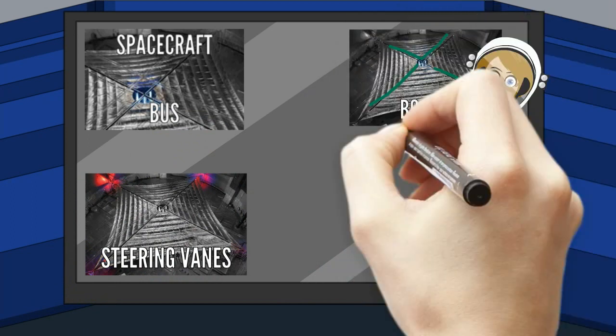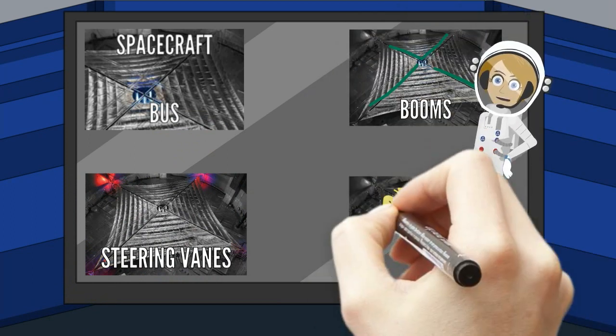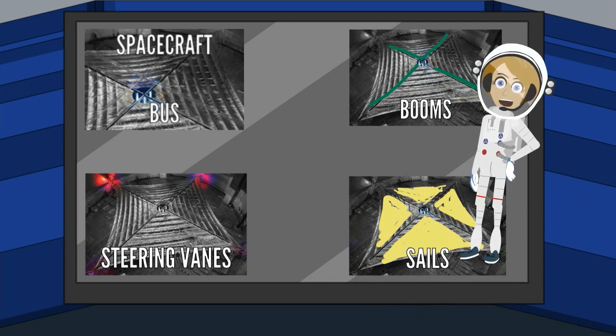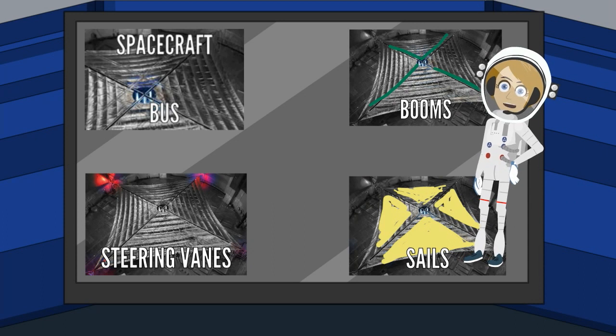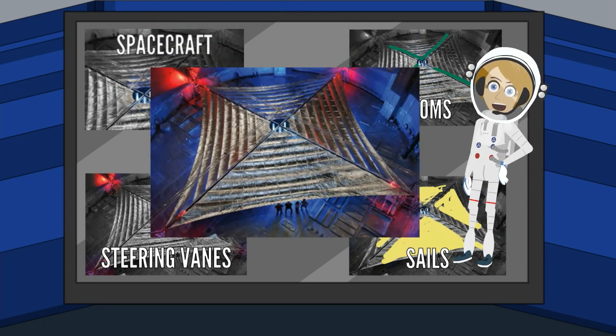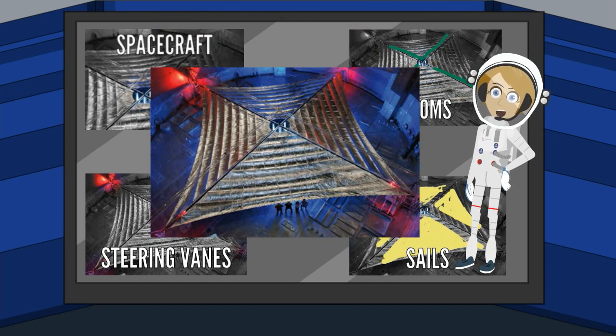Steering vanes are small sails at the end of the booms that can rotate and cause the whole sail to turn in the desired direction. Sails, the most important part, are the large thin reflective sheets that are pushed by the sun and can be greater than 100 meters on one side, often made of a plastic polyamide called Capton that is coated with a layer of aluminum to give it reflective properties.